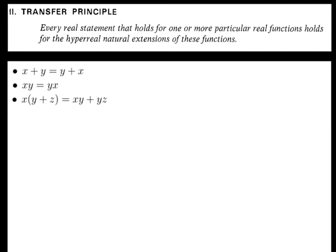For instance, addition is commutative: x plus y is the same as y plus x. Multiplication is commutative: x times y is the same as y times x. Addition and multiplication have the distributive property: x times the quantity (y plus z) equals x times y plus x times z. With these examples, the transfer principle says that if these statements are true for every real number, they're also true for every hyperreal number.